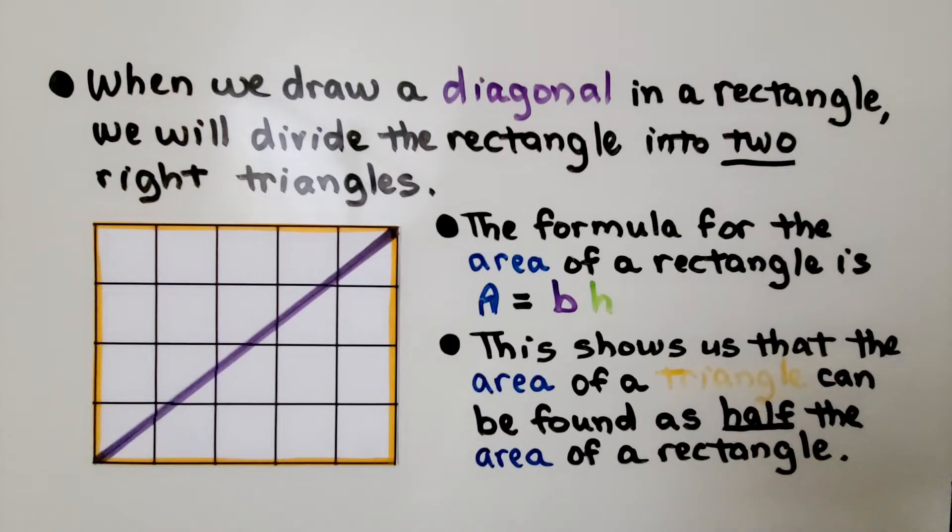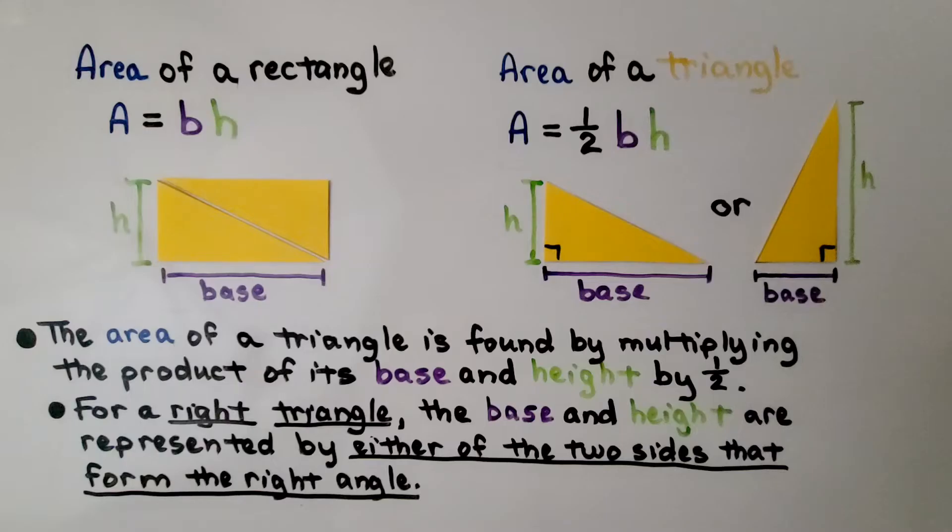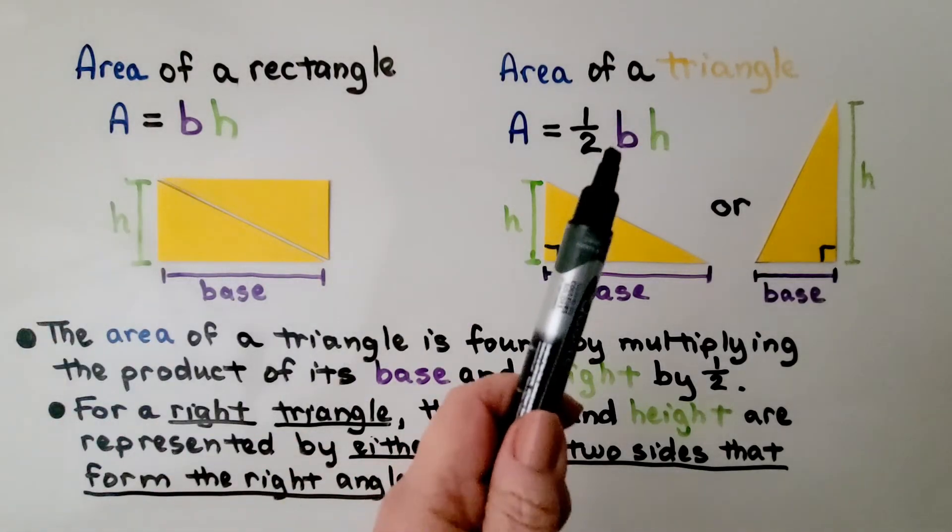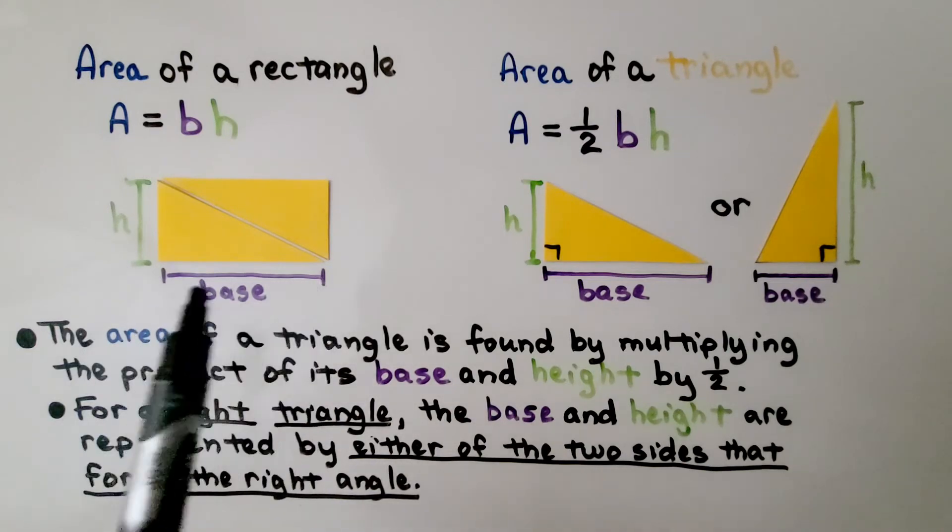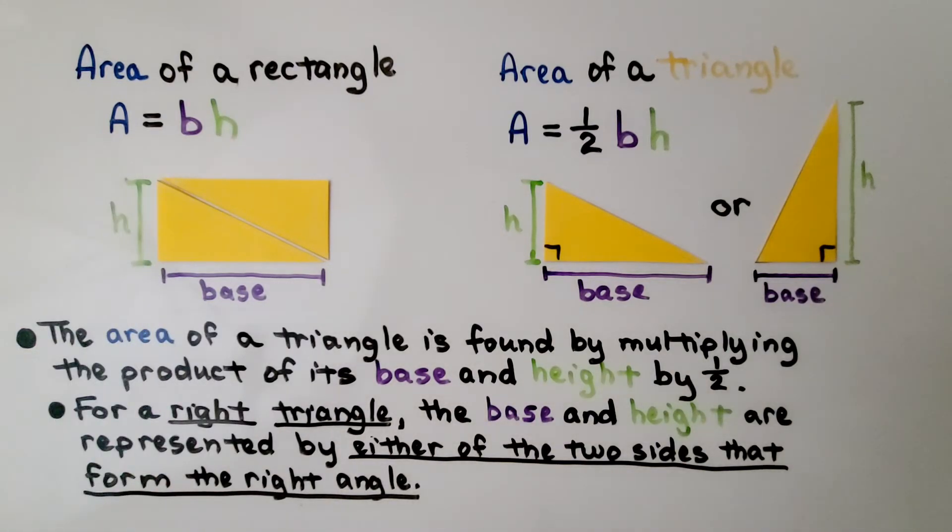And the formula for the area of a rectangle is A equals BH, which means the area is equal to the base times the height. This shows us that the area of the triangle can be found as half the area of the rectangle. We can compare the formula for the area of a rectangle and the area of a triangle. The area of a rectangle is the area is equal to the base multiplied by the height. But we also know that there are two triangles here. So the area of a triangle is equal to half the base times the height.